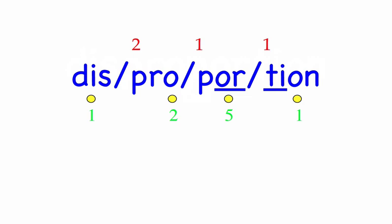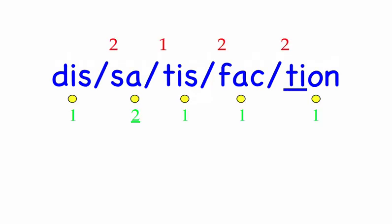Our final word is Dissatisfaction. There is a great deal of dissatisfaction on the team. Dis, three sounds, D-I-S. Sa, two sounds, S-A. Tis, three sounds, T-I-S. Fac, three sounds, F... Dissatisfaction. Mark the word. Dissatisfaction. And this completes the dictation of words from Lesson 604. Thank you.